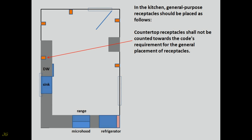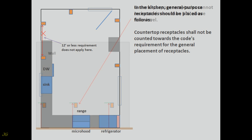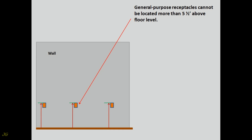Countertop receptacles shall not be counted towards the code's requirement for the general placement of receptacles. General purpose receptacles cannot be located more than 5½ feet above floor level.